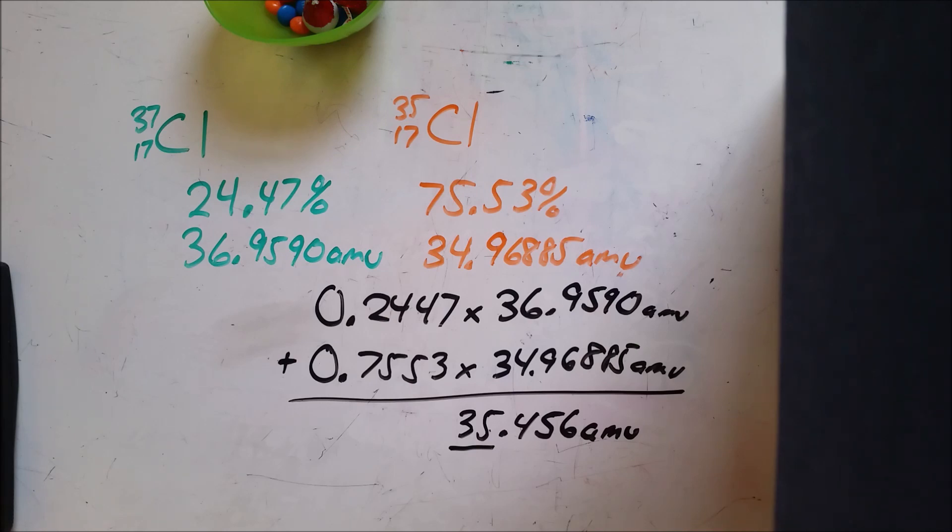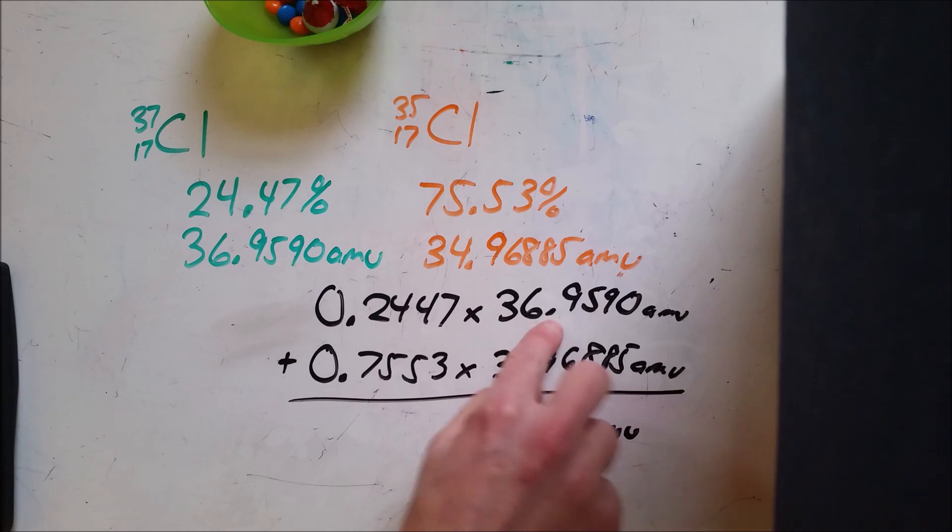Now, some elements only have one common isotope, but for many of the ones that we do calculations on, they have more than two. So in that case, you would just do this conversion process, changing this to a relative abundance, multiplying it by the mass of that isotope, and then just adding those together.